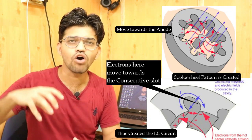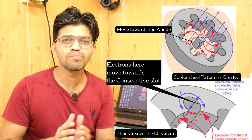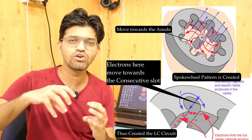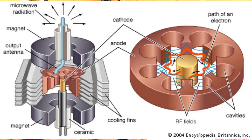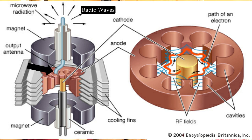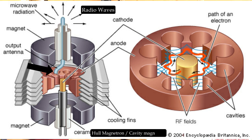Due to the presence of the magnets and the magnetic field, this spoke-wheel pattern rotates, and as it rotates it produces the radio waves. This is the basic principle behind the production of these radio waves. The antenna gets connected to one of the anode strips and emits the radio waves. As you can see, this is the model of the magnetron — the hull magnetron or cavity magnetron.